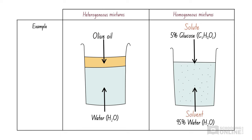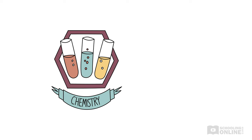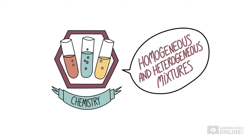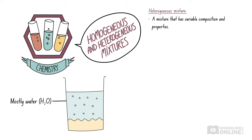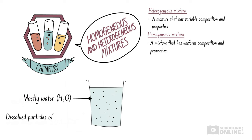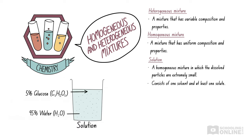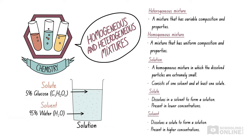You can use tables like this to answer questions during exams. Let's revise the definitions covered in this lesson. In the HSC Chemistry course, you will need to distinguish between homogeneous and heterogeneous mixtures. A heterogeneous mixture is a mixture that has variable composition and properties. A homogeneous mixture is a mixture that has uniform composition and properties. A solution is a homogeneous mixture in which the dissolved particles are extremely small, consisting of one solvent and at least one solute. A solute is a substance that dissolves in a solvent to form a solution and is present in lower concentrations. A solvent is a substance that dissolves a solute to form a solution and is present in higher concentrations.